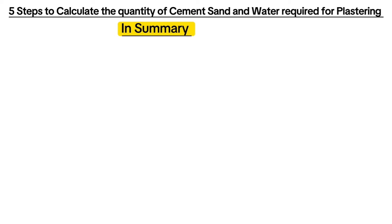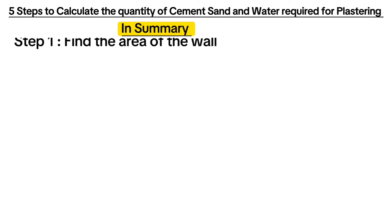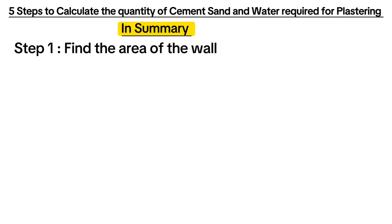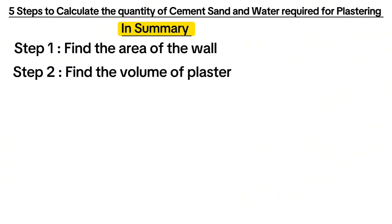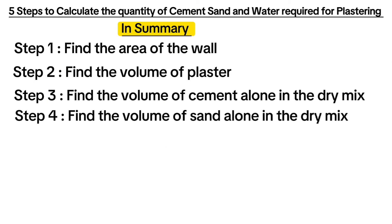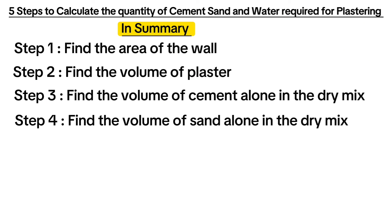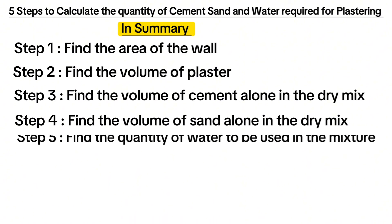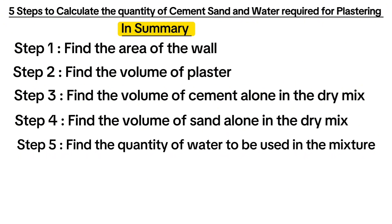In summary, when finding the quantity of cement, sand and water for plastering: Step 1 is to find the area of the wall; Step 2 is to find the volume of the plaster; Step 3 is to find the volume of cement alone in the dry mixture; Step 4 is to find the volume of sand alone in the dry mix; and Step 5 is to find the quantity of water to be used in the mixture.